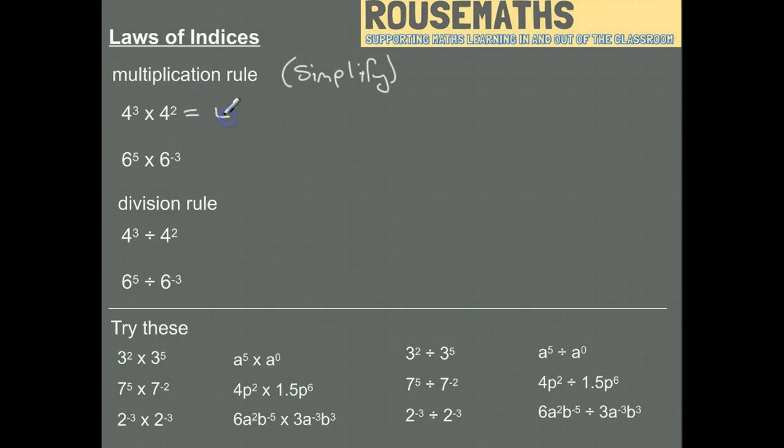We've got 4 cubed, which is 4 times 4 times 4, and that is being multiplied by 4 squared, which is 4 times 4. You can see from that we've got 1, 2, 3, 4, 5 fours all multiplied together.